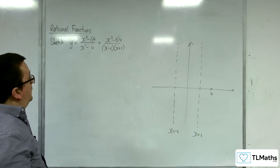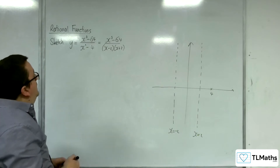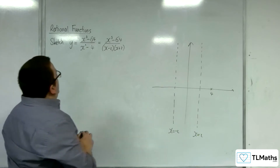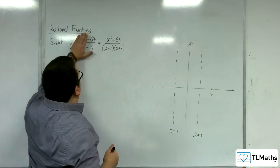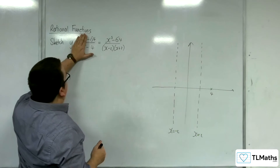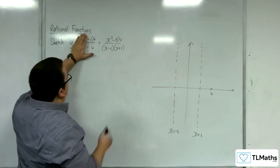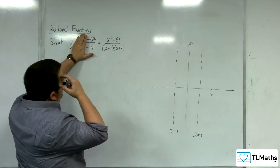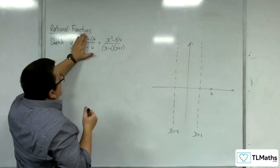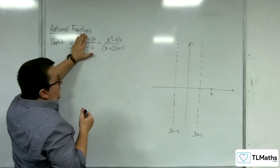Where it crosses the y-axis — that's when x is 0. So we'll have minus 64 divided by minus 4, which gives 16. So the y-intercept is at minus 16.